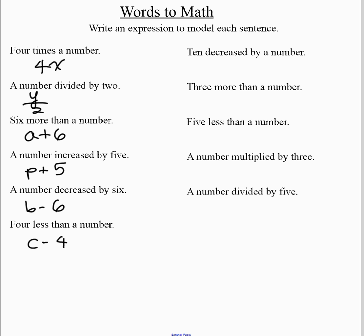Now, this one's a little tricky. Ten decreased by a number. That means I'm taking ten and I'm decreasing it by some number, let's call it z.